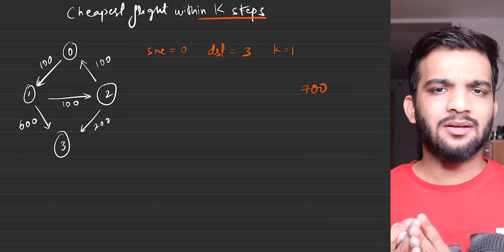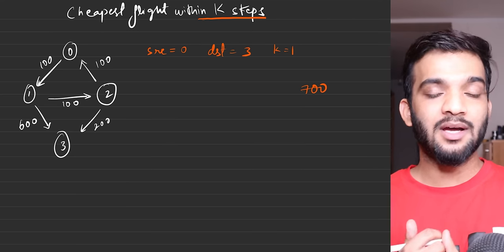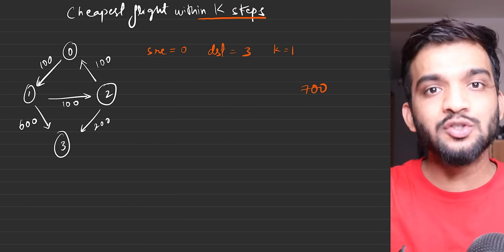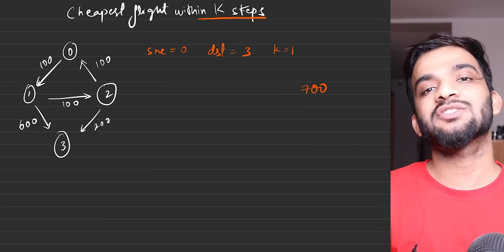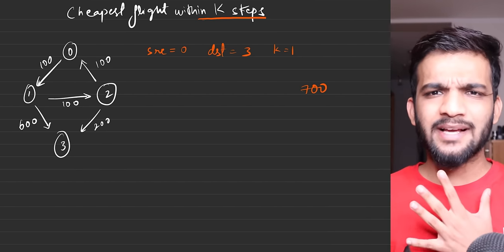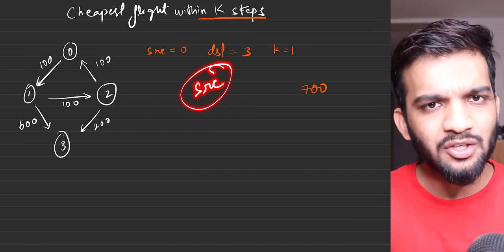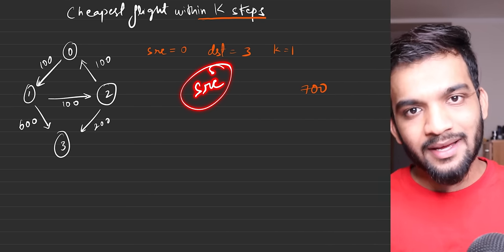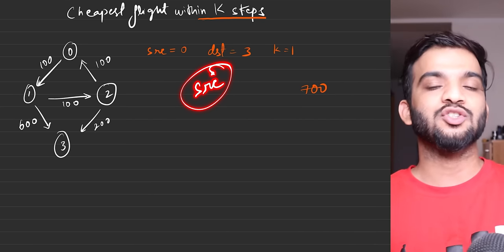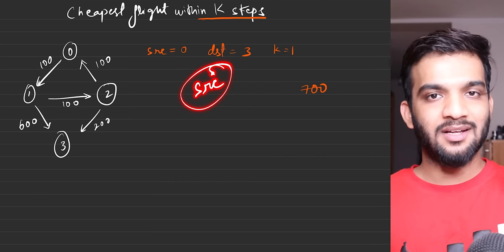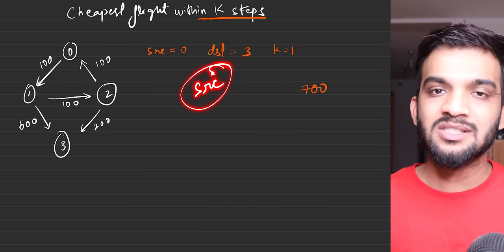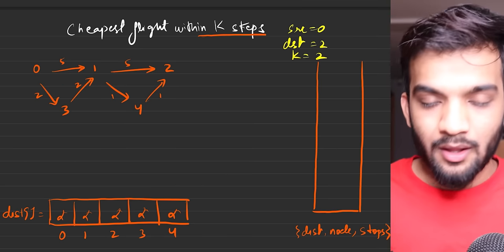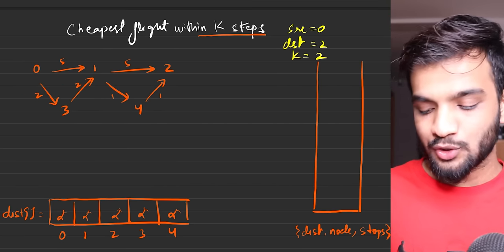You might think: just apply Dijkstra's algorithm and that should give the answer. Let's take a test case and try to apply simple Dijkstra to see why it will fail. We start from a given source node, use a priority queue, and a distance array. If you don't know Dijkstra's algorithm, go back in this series and watch it first — I'm assuming you've already seen the previous videos.